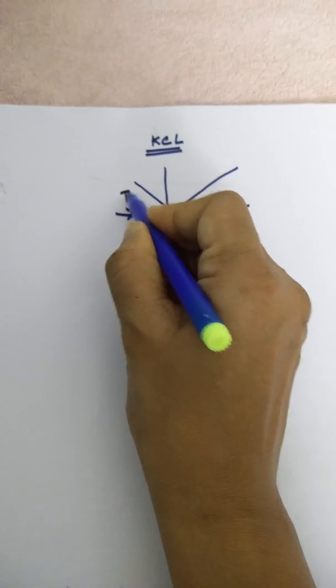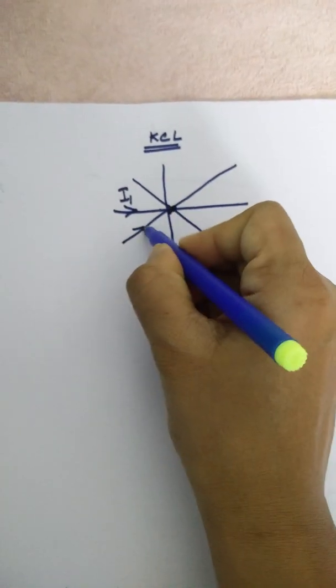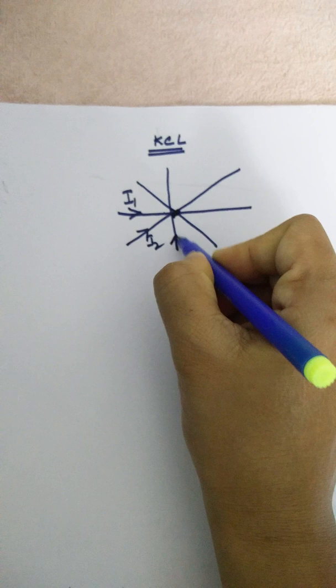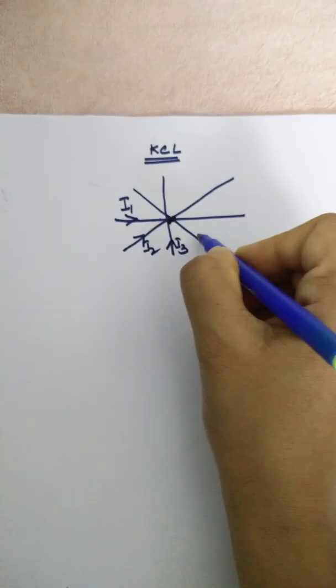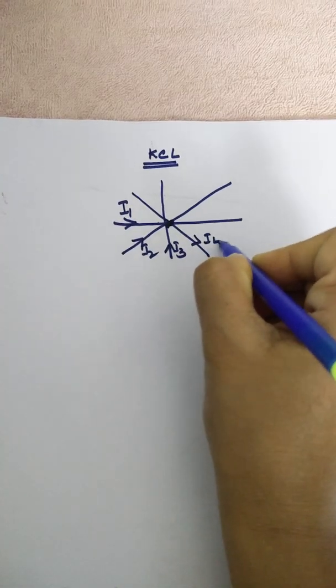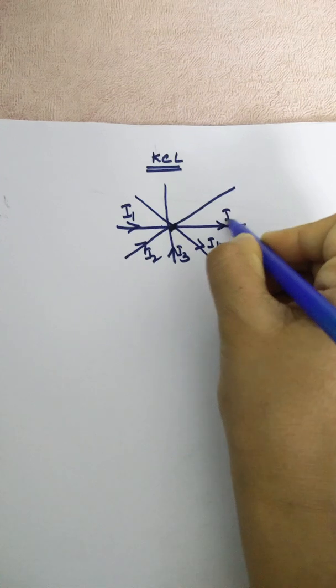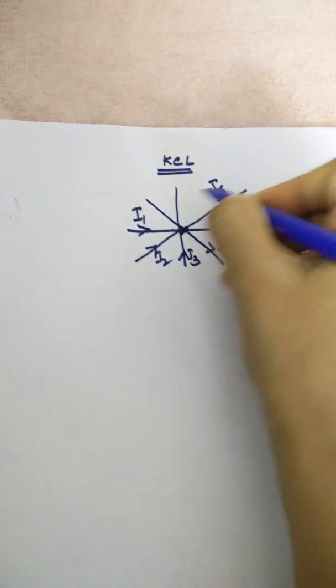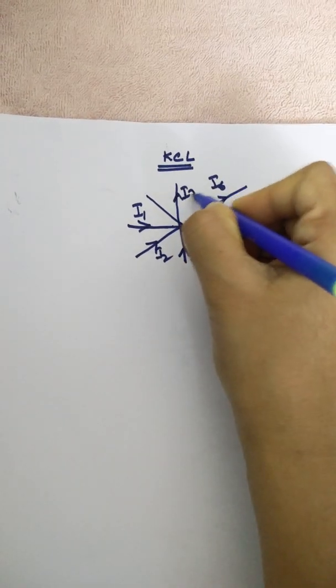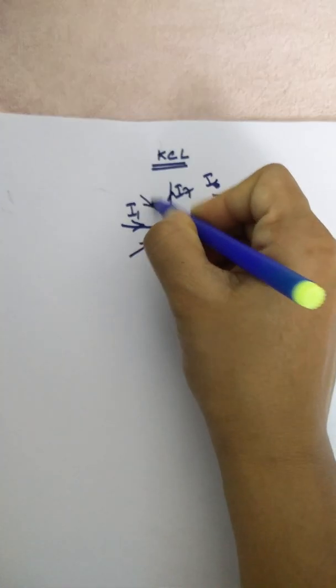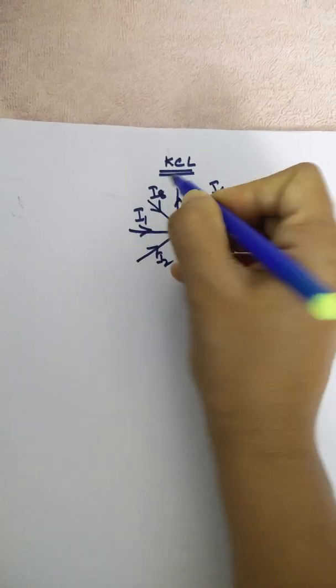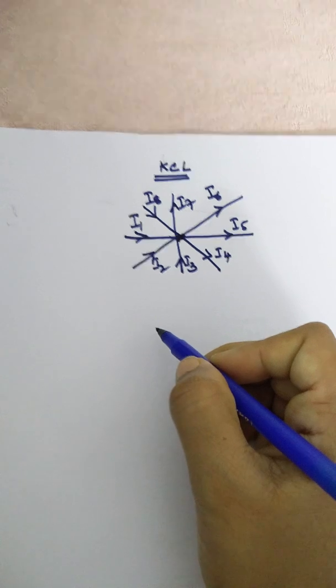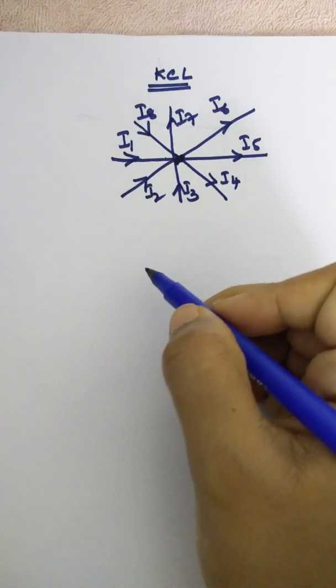So let us assume this current as I1, I2, I3. Some currents, let us assume this as I4, I5, I6, and I7. One more current is there. Let us assume this as I8. So some currents are entering and some currents are leaving.